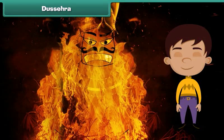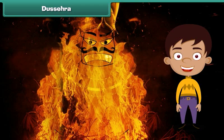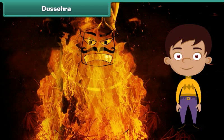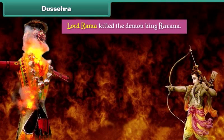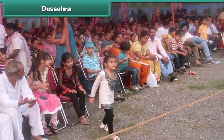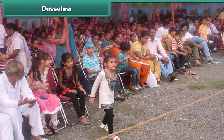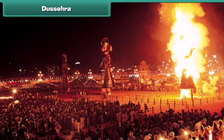Dussehra is another Hindu festival that marks the victory of good over evil. It is believed that on this day Lord Ram killed the demon king Ravan. People gather in a large field in the evening and burn effigies of Ravan, his brother Kumbhakaran, and his son Meghnad.